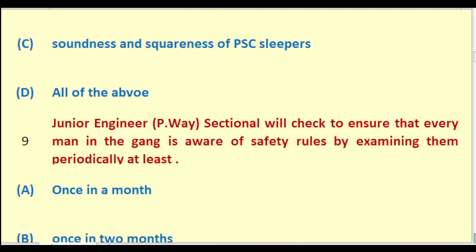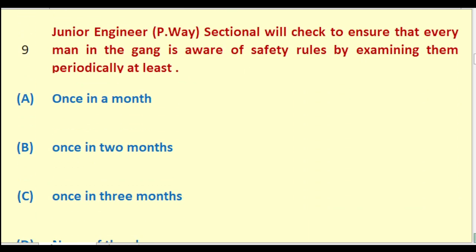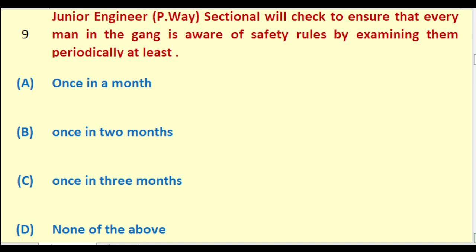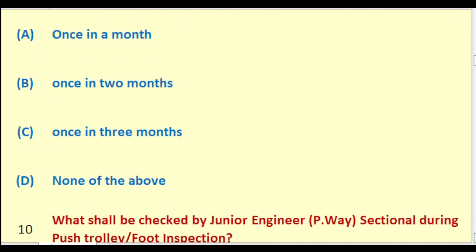Junior Engineer Permanent Way Sectional will check to ensure that every man in the gang is aware of safety rules by examining them periodically at least: once in a month; once in two months; once in three months; none of the above. The right answer is: once in two months.